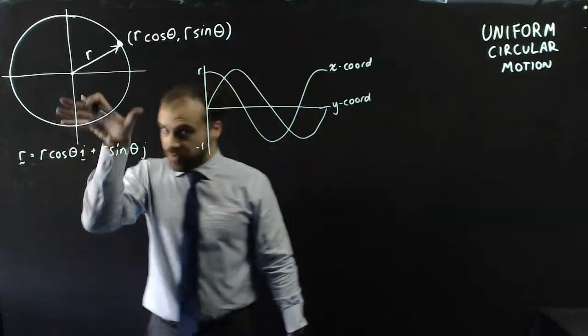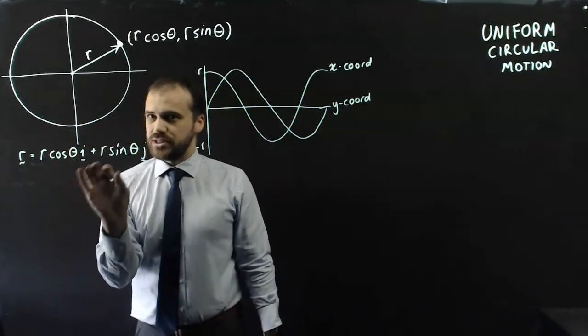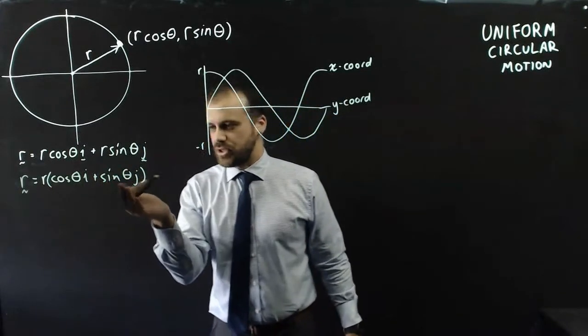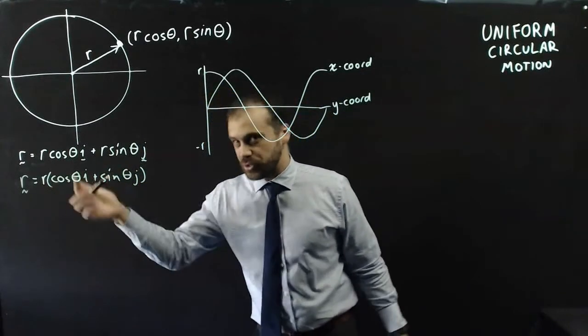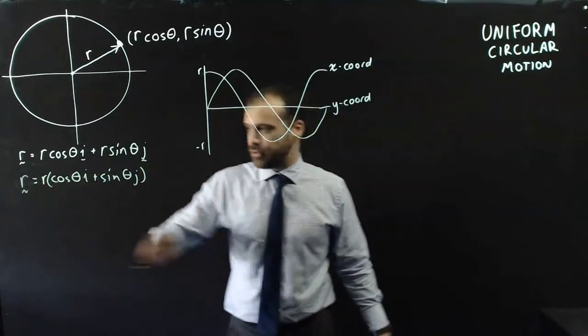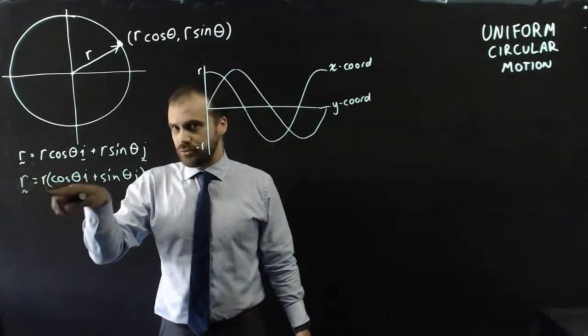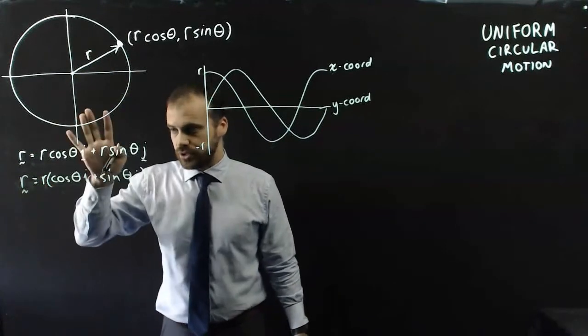In terms of our vector function, we can factorize this, make it a little bit neater: just r cos theta i plus sine theta j, because they're both being multiplied by r. Just be really careful here. This is the displacement vector r, the vector, but this is the radius of our circle.